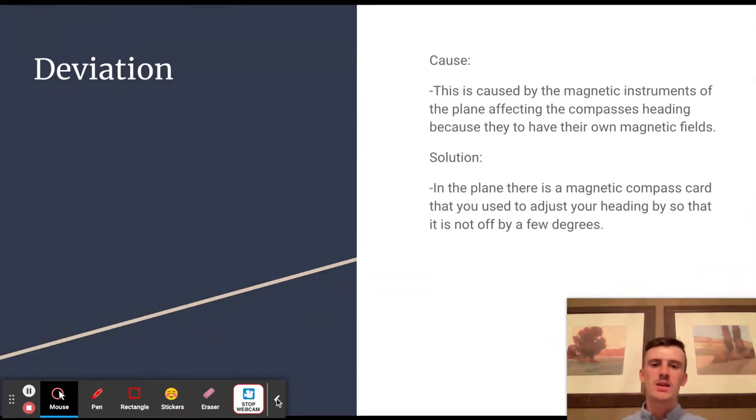The next one is deviation. Deviation is caused by the magnetic instruments of the plane affecting the compass heading because they have their own magnetic fields.